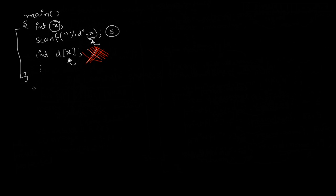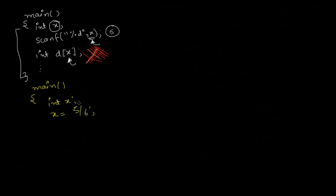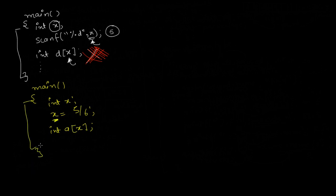In some cases you might want to compute x from some operation, like x = 5/6, or x = a/b using different variables, and then allocate that much memory to store data in your program. But this is also not allowed with regular arrays in C.